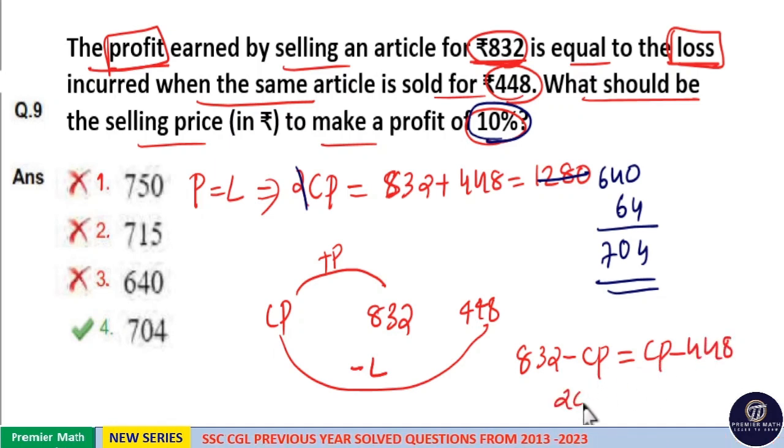Now you can see 2CP equals 1280. So this is the concept used here.